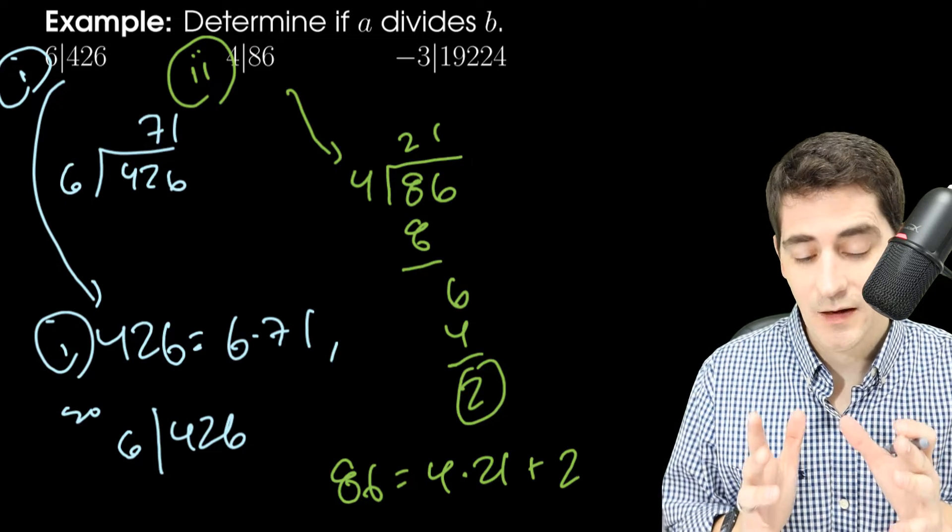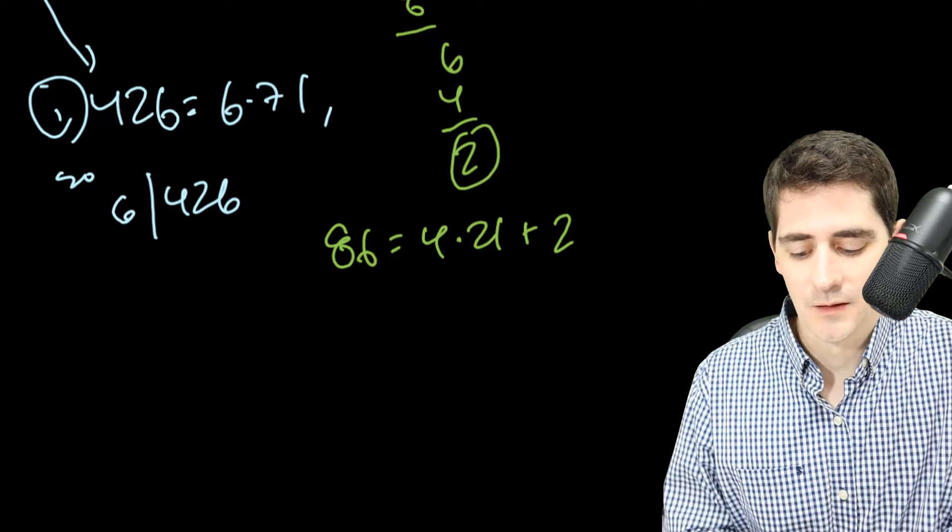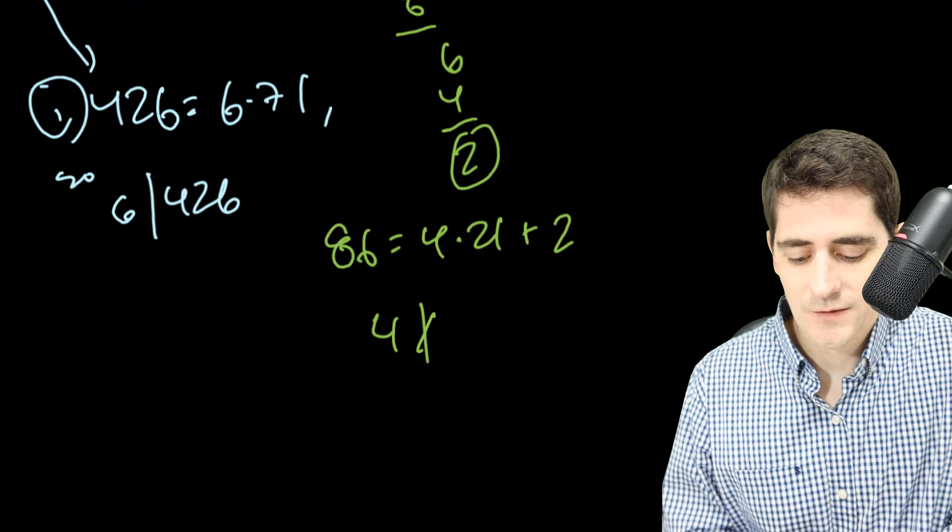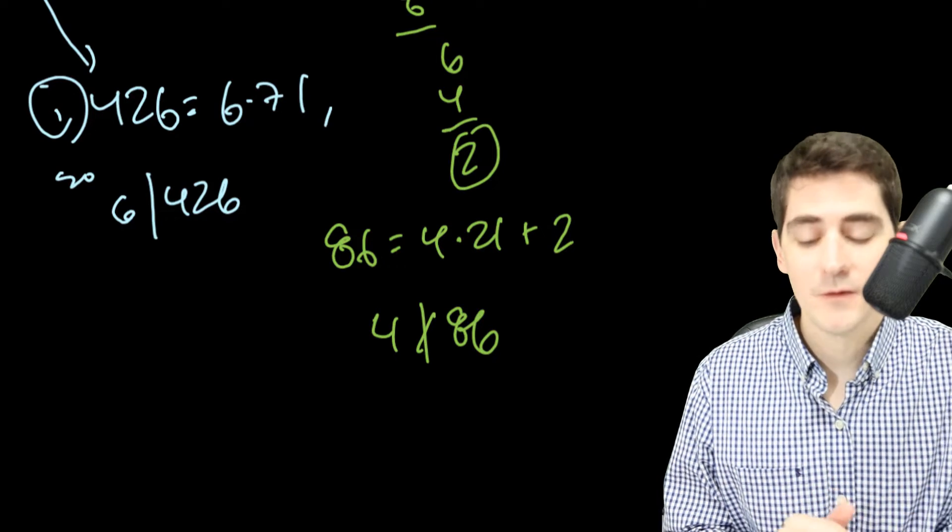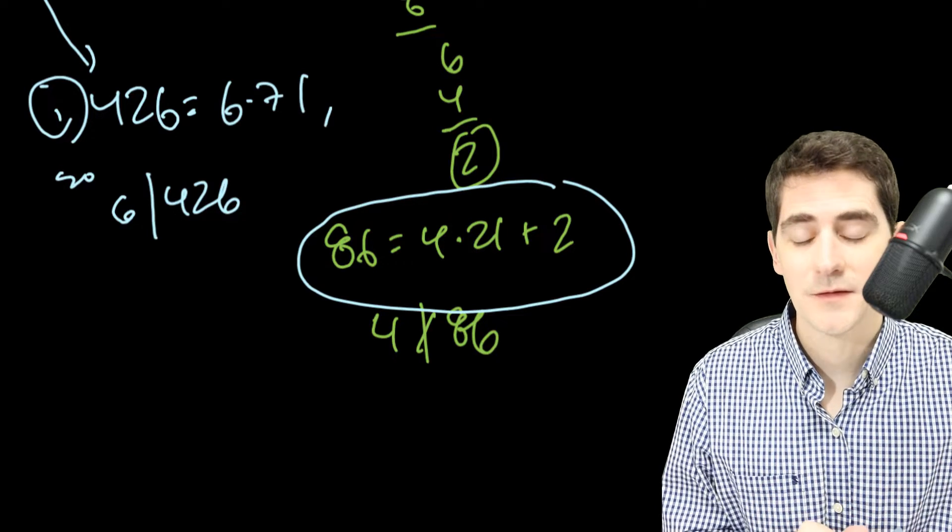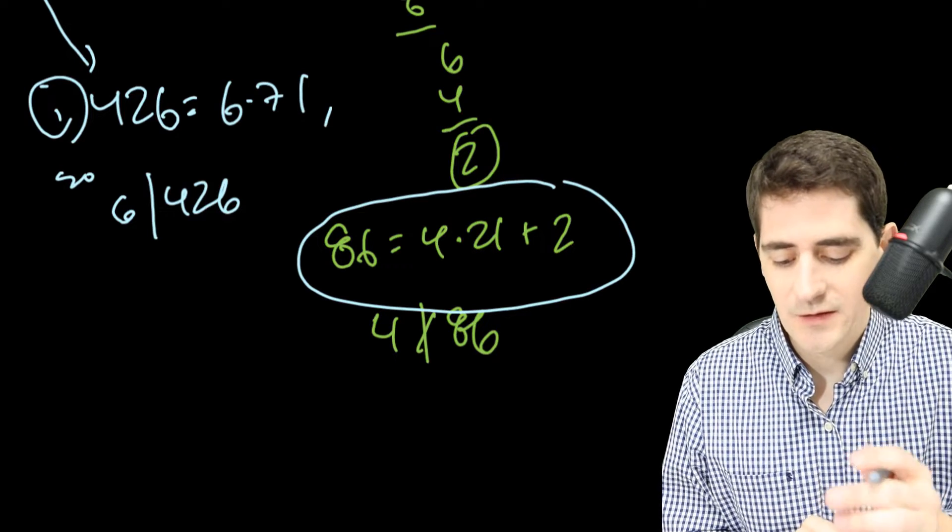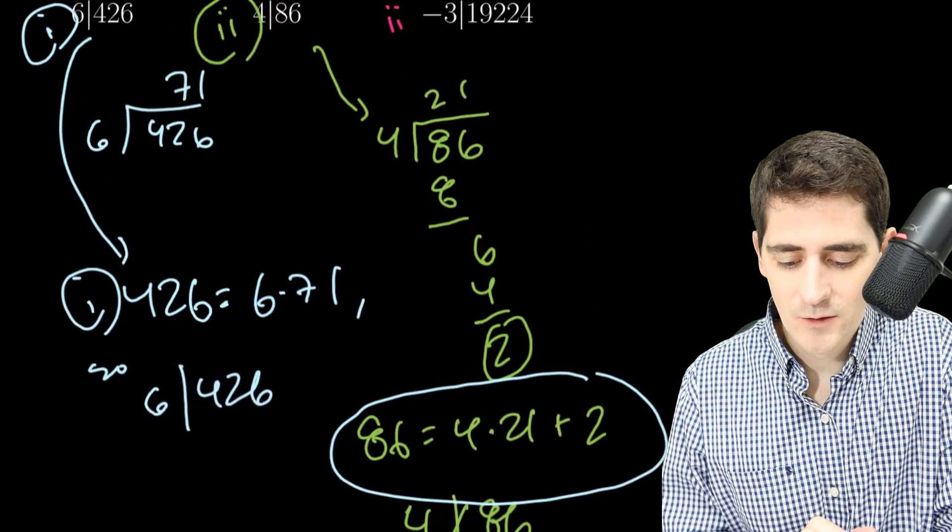But that plus 2 means I have a remainder. So I cannot write 86 as 4 times something. So in this case, 4 does not divide 86. Now, later on when we get to the division algorithm, this statement will be useful to us. But for today, we need to say that 4 does not divide 86. We'll try one more.